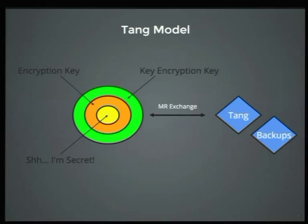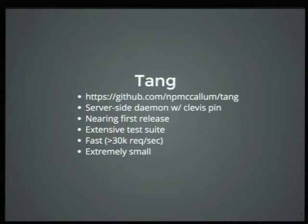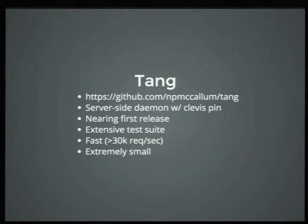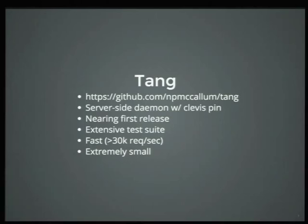This makes for a very, very limited attack footprint — the size of this server is extremely small. The project includes the server-side daemon with the Clevis pin. We are nearing our first release and it has an extensive test suite. We can handle north of 30,000 requests per second. Think of a data center with 100,000 machines all coming up across a span of about five seconds — we can handle this on one computer. Very lightweight, very fast, very small attack surface, and substantially tested.